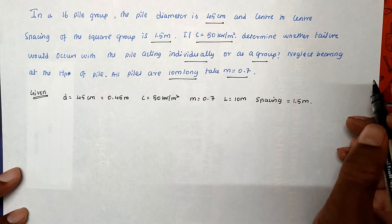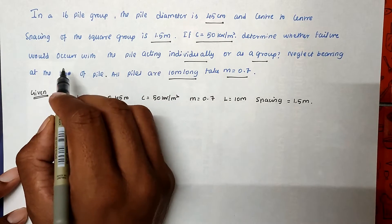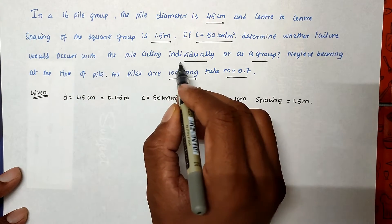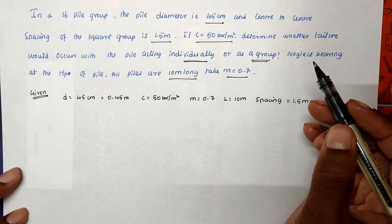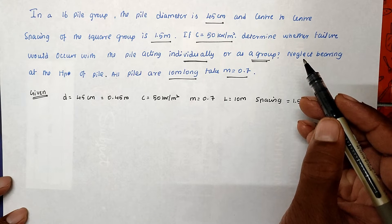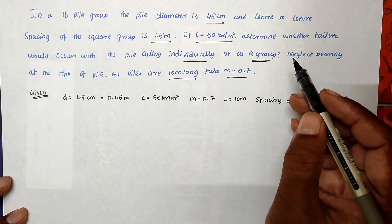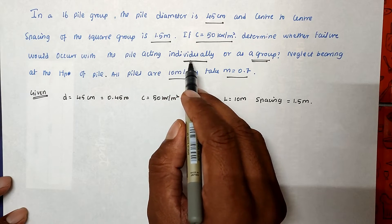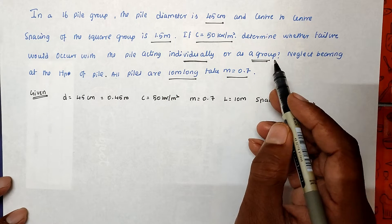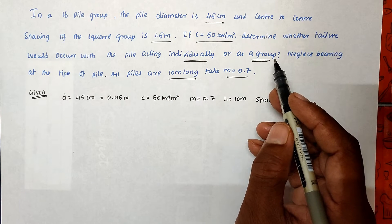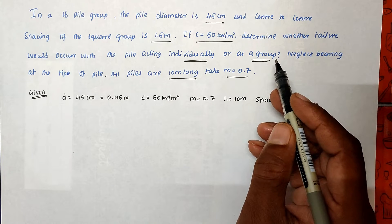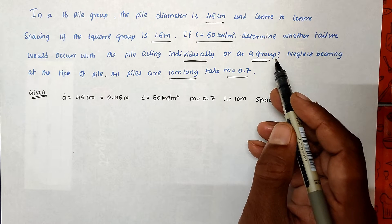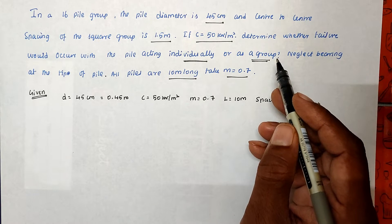We have to find out whether failure occurs with the pile acting individually or as a group. We can find out the bearing capacity of each type. Whichever bearing capacity is maximum is the safer one, and if the bearing capacity is weaker, failure will occur.